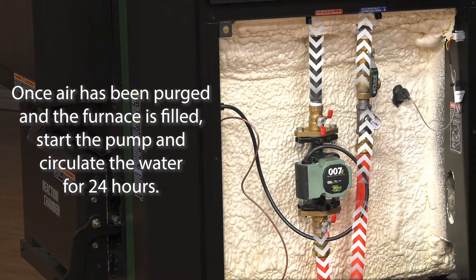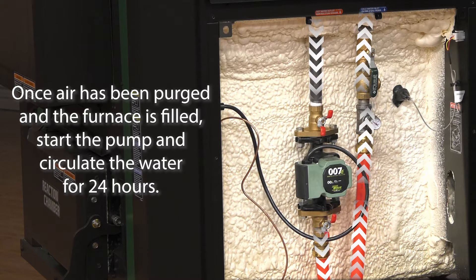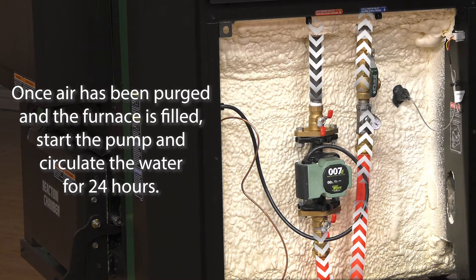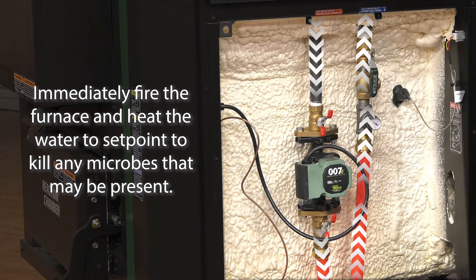Once air has been purged from the system and the furnace is filled to 1 inch below the full mark on the site gauge, start the pump and circulate the water for 24 hours. Immediately fire the furnace and heat the water to set point to kill any microbes that may be present.